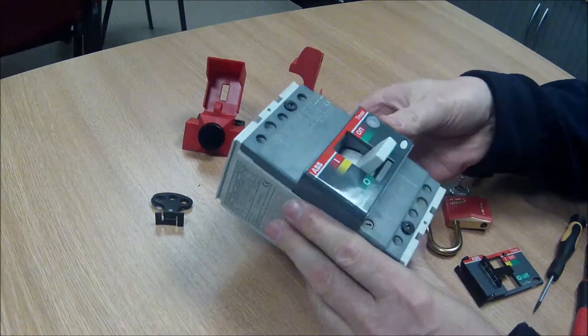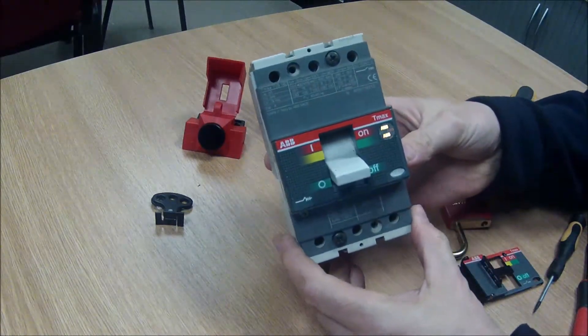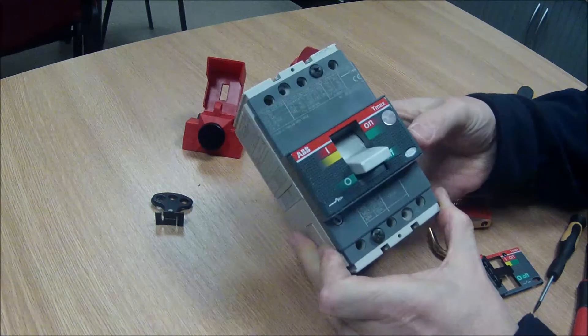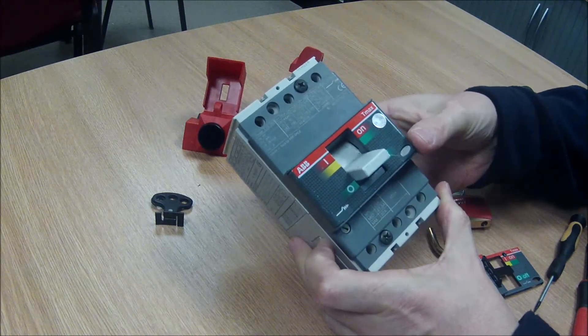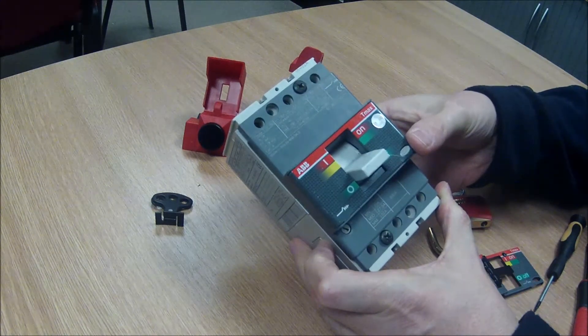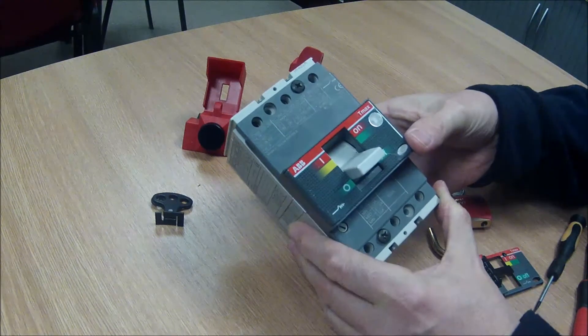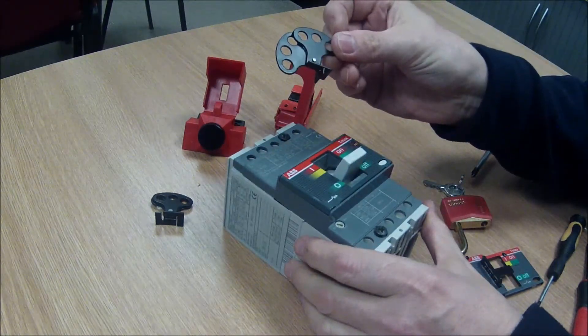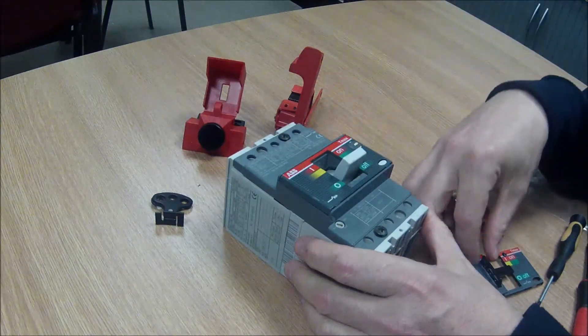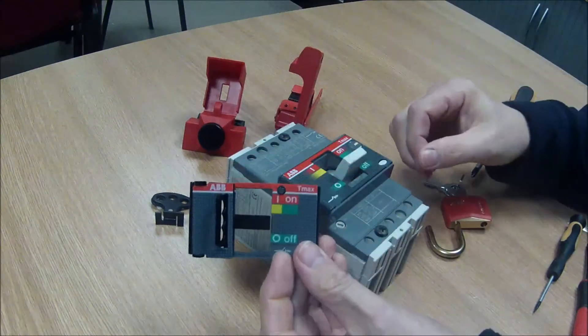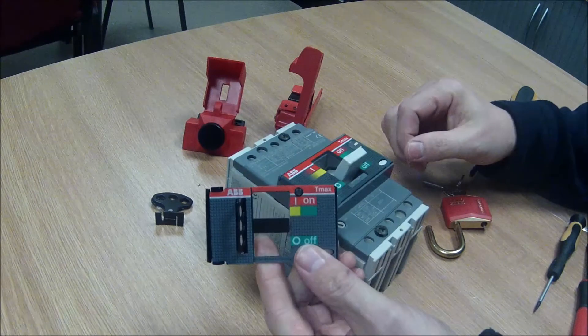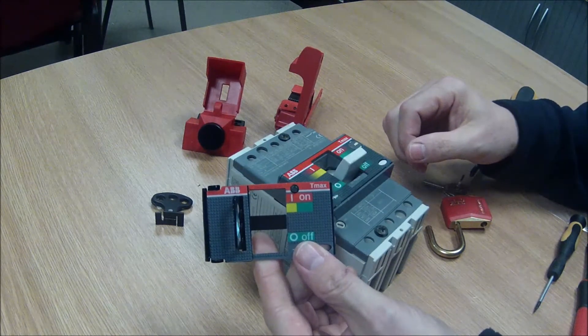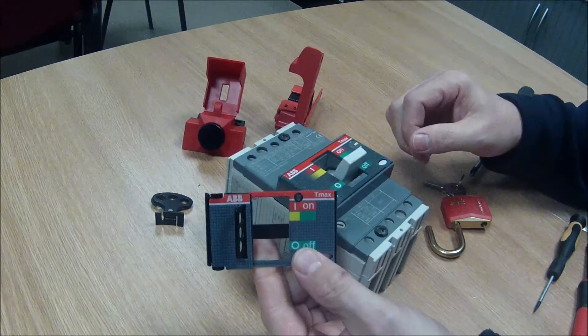Here we're taking a look at lockout devices for this ABB TMAX circuit breaker. Now ABB offer their own device for this breaker. This one here is removable. This one here becomes permanently fixed to the breaker. Now I'm just going to show you here how we use them.